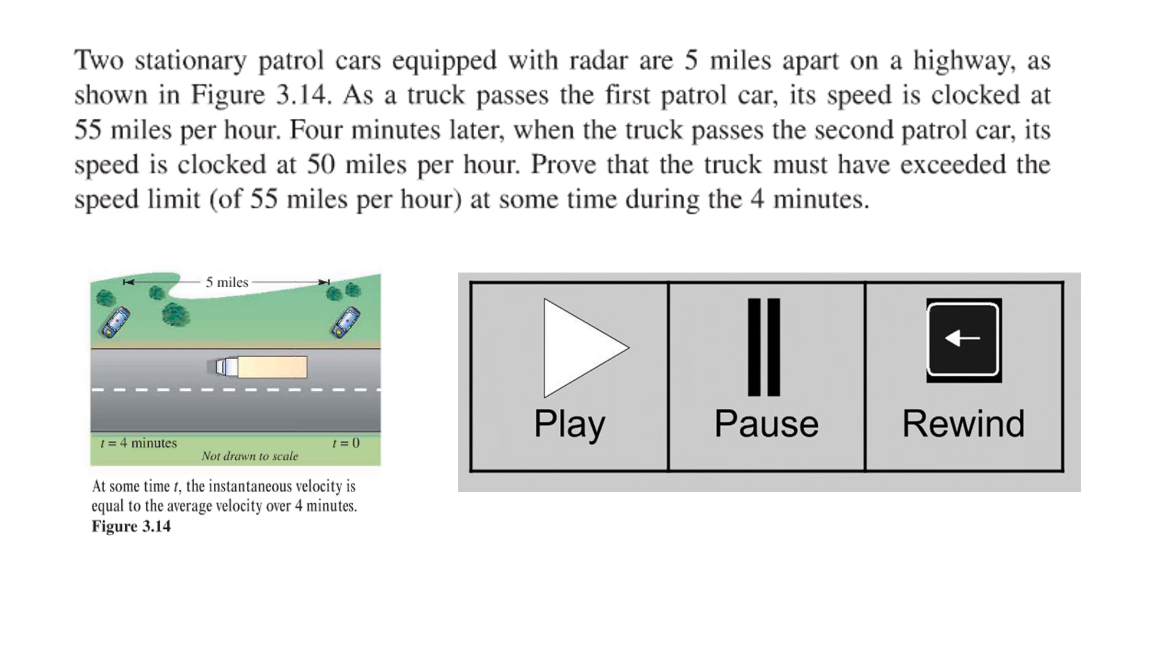Here's a word problem and it's important to do word problems because I will ask you word problems and life is a word problem. Two stationary patrol cars equipped with radar are five miles apart on a highway and there's a picture you could have drawn the picture yourself. As a truck passes the first patrol car its speed is clocked at 55 miles per hour. Four minutes later when the truck passes the second car it is at 50 miles an hour. Prove that the truck must have exceeded the speed limit of 55 miles per hour at some time during the four minutes. This is a little bit like the question I asked you in the gym goes to Indianapolis story. I said oh my average speed going to Indianapolis was 70 miles per hour. Do you think I went 70 miles per hour the whole time?